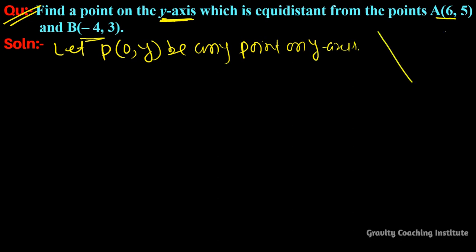We have to find P(0,y) which is equidistant from A(6,5) and B(-4,3). According to the question...